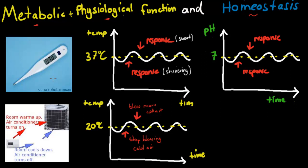Homeostasis is the idea of keeping everything constant. For example, when it comes to our temperature, we need to keep it constant at about 37 degrees Celsius — that's our normal body temperature. It doesn't stay there by itself; it will change occasionally, going up and down a tiny bit, but we do have mechanisms that allow us to bring it back to that set point.